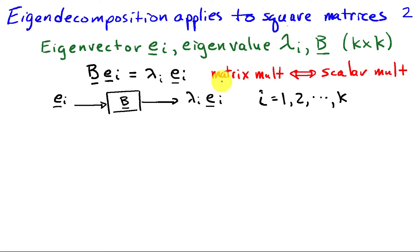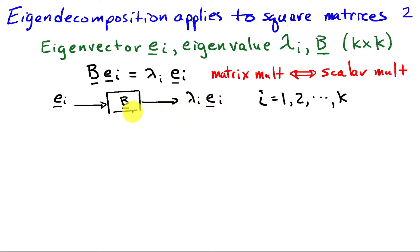The notion is that matrix multiplication corresponds to scalar multiplication. Another way to think about it is if I view this matrix B as an operator that acts on an input vector — when I put E_i in, what comes out is lambda_i times E_i. The action of matrix multiplication for an eigenvector is equivalent to multiplication by a scalar. In general, there can be capital K eigenvalues and eigenvectors for a given k by k matrix.